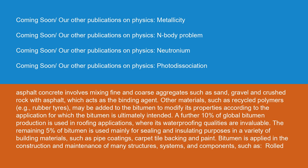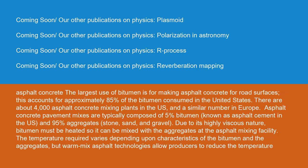The remaining 5% of bitumen is used mainly for sealing and insulating purposes in a variety of building materials, such as pipe coatings, carpet tile backing, and paint. Rolled asphalt concrete — the largest use of bitumen — accounts for approximately 85% of the bitumen consumed in the United States. There are about 4,000 asphalt concrete mixing plants in the U.S. and a similar number in Europe. Asphalt concrete pavement mixes are typically composed of 5% bitumen — known as asphalt cement in the U.S. — and 95% aggregates including stone, sand, and gravel.